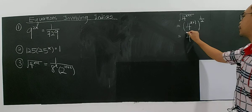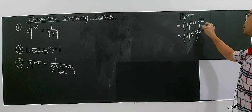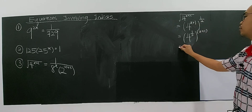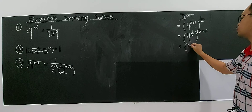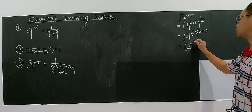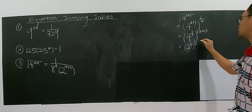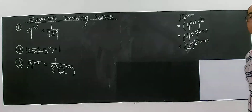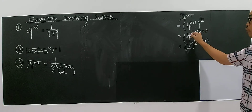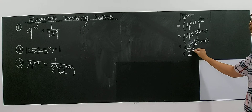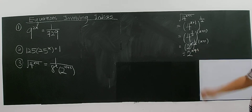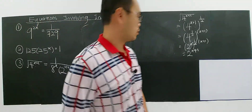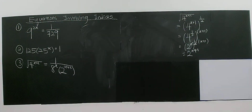On the left-hand side, you have the square root of 4 to the power of x plus 1. You can interchange: 4 is 2 to the power of 2, and the square root is the power of 1 over 2. Multiplying gives 2 to the power of x plus 1. So the left-hand side simplifies to 2 to the power of x plus 1.